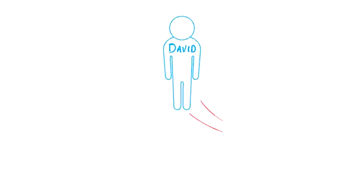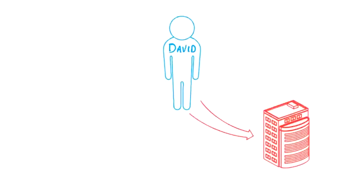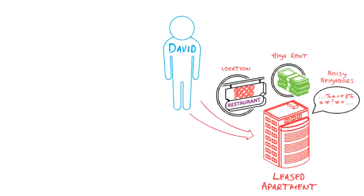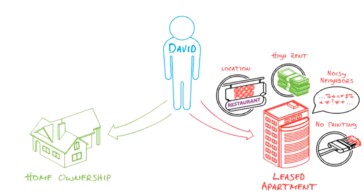Meet David. David lives in a moderate-sized downtown apartment. He enjoys the convenience of the location, but David's rent is a little high, and he often hears his neighbors through the walls. He'd also like to paint his living room, but is not allowed. David considers homeownership instead.